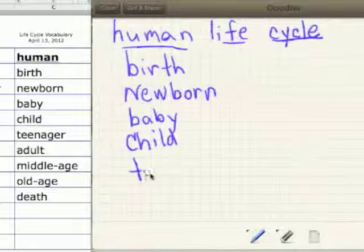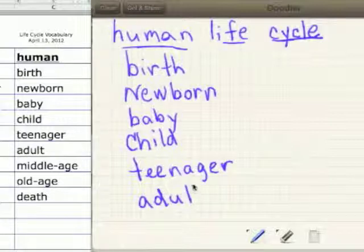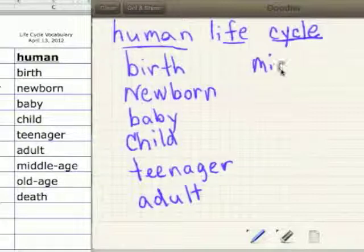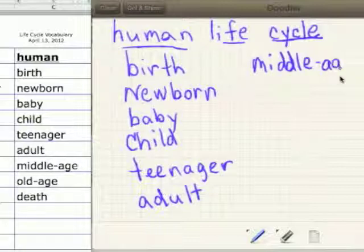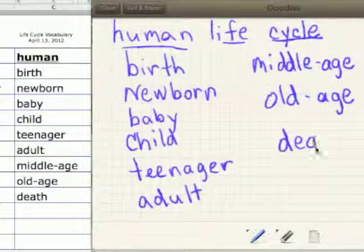The child becomes a teenager. T-E-E-N-A-G-E-R. The teenager becomes an adult. A-D-U-L-T. The adult becomes middle-aged. M-I-D-D-L-E-A-G-E. Middle age. Middle age gives to old age. O-L-D-A-G-E. Old age. And old age leads to death. D-E-A-T-H. Boom. Dead. In the box.